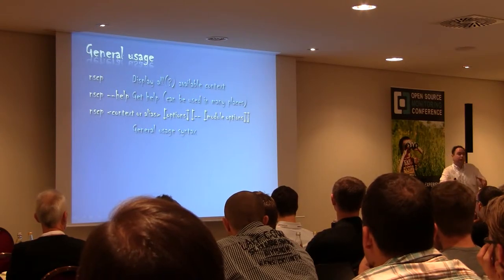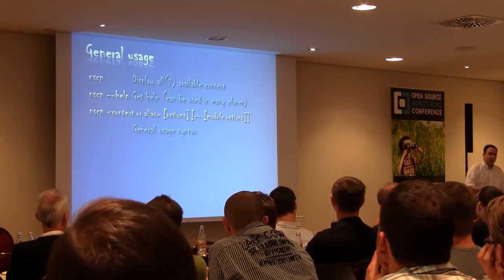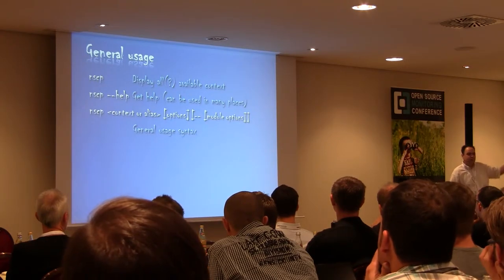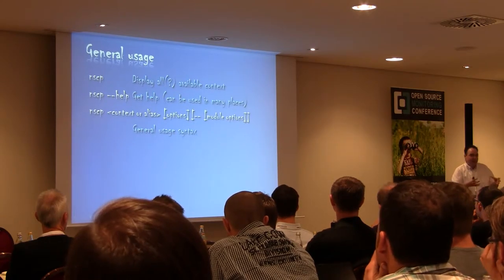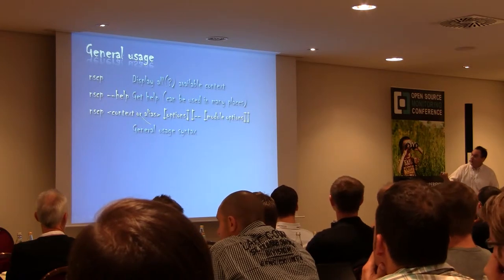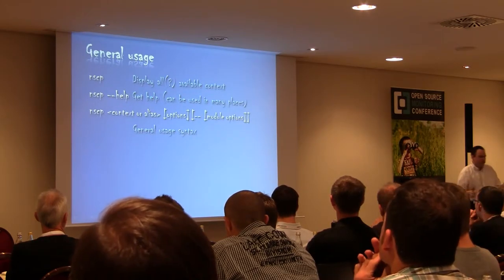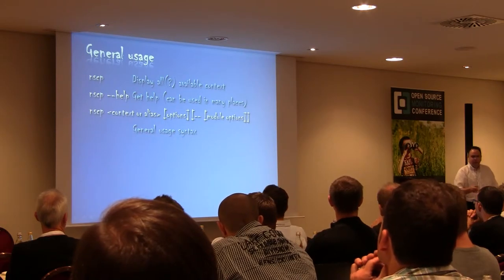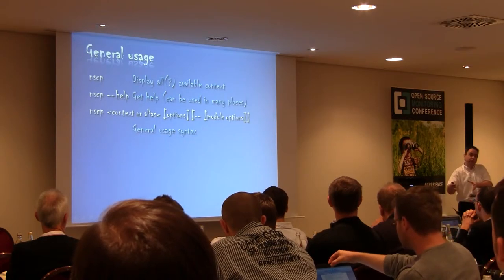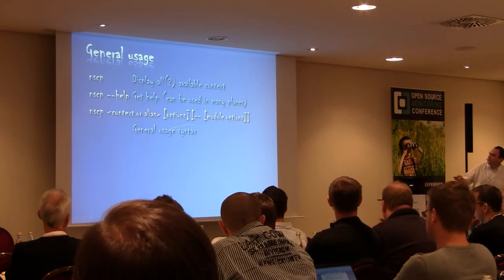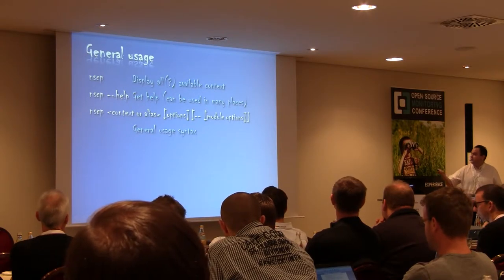The reason you do it that way is to avoid clashing command line options — you can box them. So the first word is the context or alias — the thing you're working with — then you have options, then '--', then more options. The reason for the double-dash separator is that NSClient++ is modular: options before it are for NSClient++ itself, and options after are for the module you're currently working with.